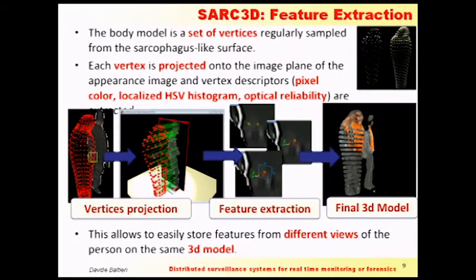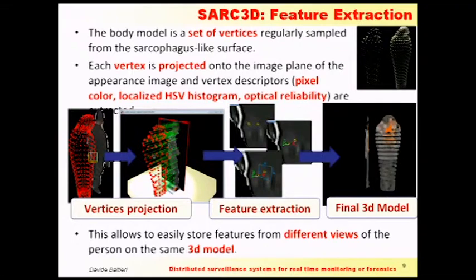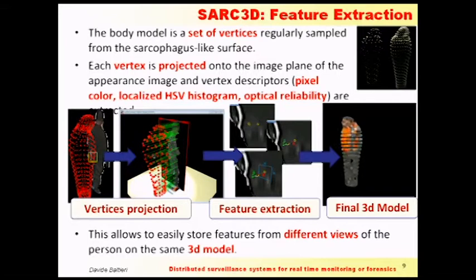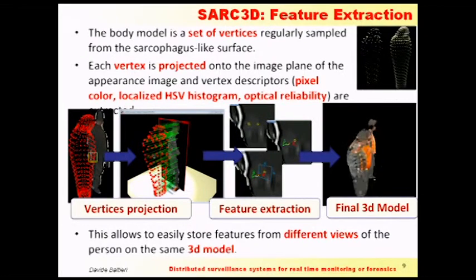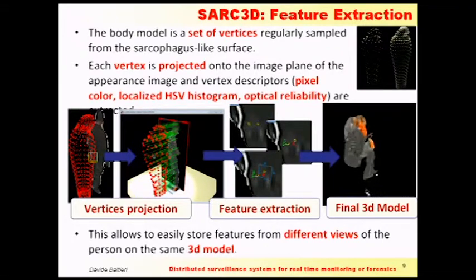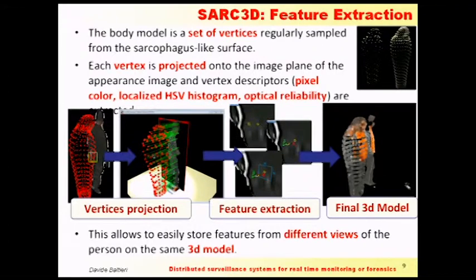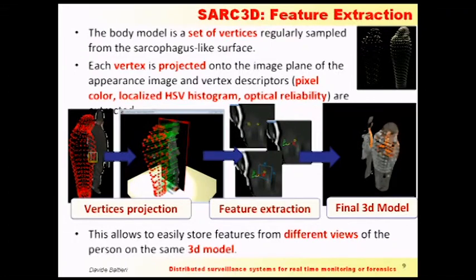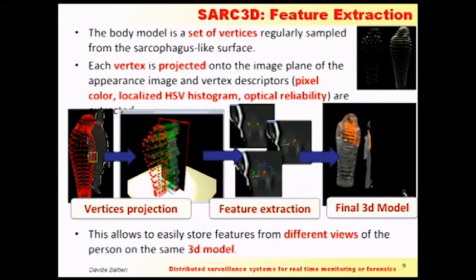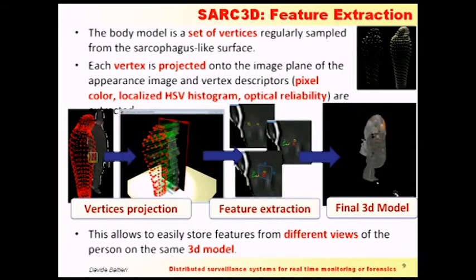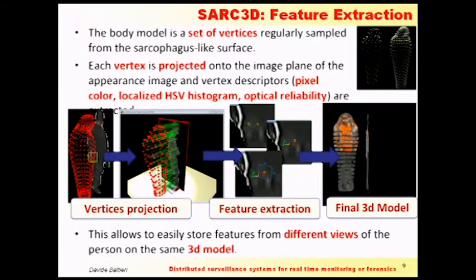To define how to map appearance information onto the model, I simply take the model and sample points on its surface using regular sampling. Each point on the surface of this model should contain the appearance feature descriptor of a person. I apply computer graphics: after the correct positioning and alignment of the model, I back-project each vertex onto the image plane, extract appearance features at each projected position, and then back-project them onto the model to obtain the final model with the person's appearance projected on it.